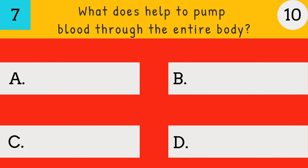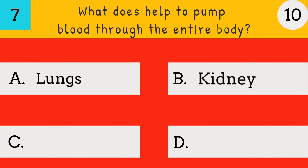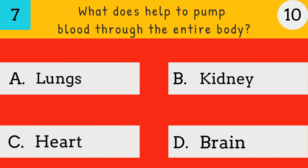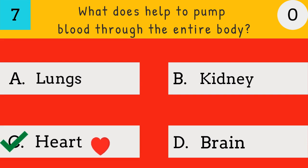What does help to pump blood through the entire body? Lungs, Kidney, Heart, Brain. Answer: Heart. Heart helps to pump blood through the entire body.